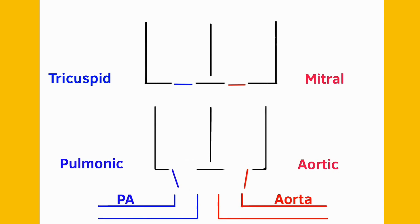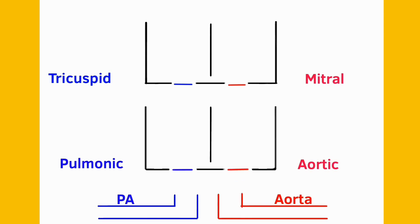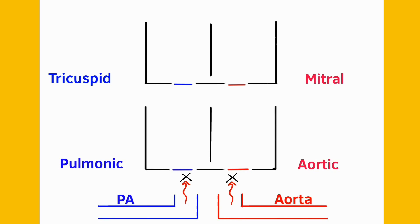This phase of ventricular contraction is called systolic ejection. When the ventricles are done pushing out blood, they go back to their resting state and the pulmonic and aortic valves close to prevent backflow of blood into the ventricles. This phase is called isovolumetric relaxation — the ventricles are relaxing but no blood is moving in because all the valves are closed, so there is no change in volume, hence the term isovolumetric.